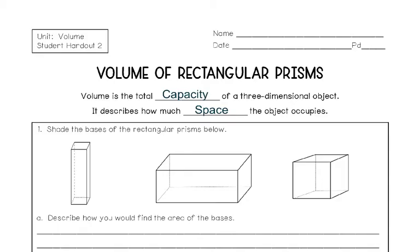Let's start with the definition for volume, and then we'll review some other geometry work that leads us up to volume. Volume is the total capacity of a 3D object. It describes how much space the object occupies.